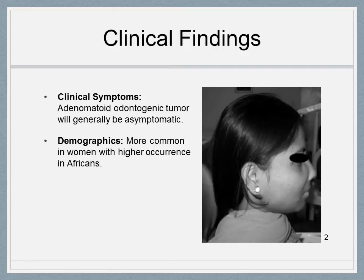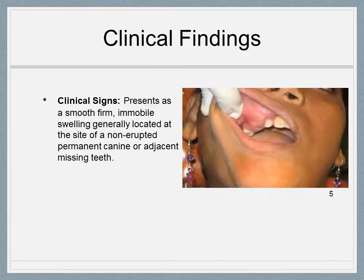Although rare, AOT is highest in Africa at 1–39%. The tumor presents as a smooth, firm, immobile swelling generally located at the site of a non-erupted permanent canine or adjacent missing teeth. The buccal vestibule appears distended, yet the surface mucosa is not disfigured. The tumor is generally non-tender upon palpation and clinically demonstrates a straw-colored fluid upon aspiration. Facial disfiguration along with the associated edentulous area is the primary concern for care.